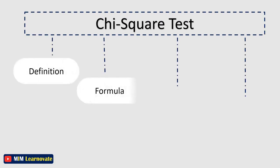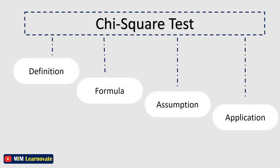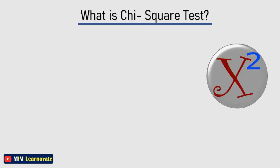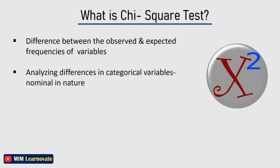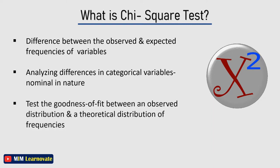Chi-squared test: definition, formula, assumption, and application. What is a chi-squared test? A chi-squared test is a measure of the difference between the observed and expected frequencies of the outcomes of a set of events or variables. Chi-squared is useful for analyzing such differences in categorical variables, especially those nominal in nature. It can also be used to test the goodness of fit between an observed distribution and a theoretical distribution of frequencies.